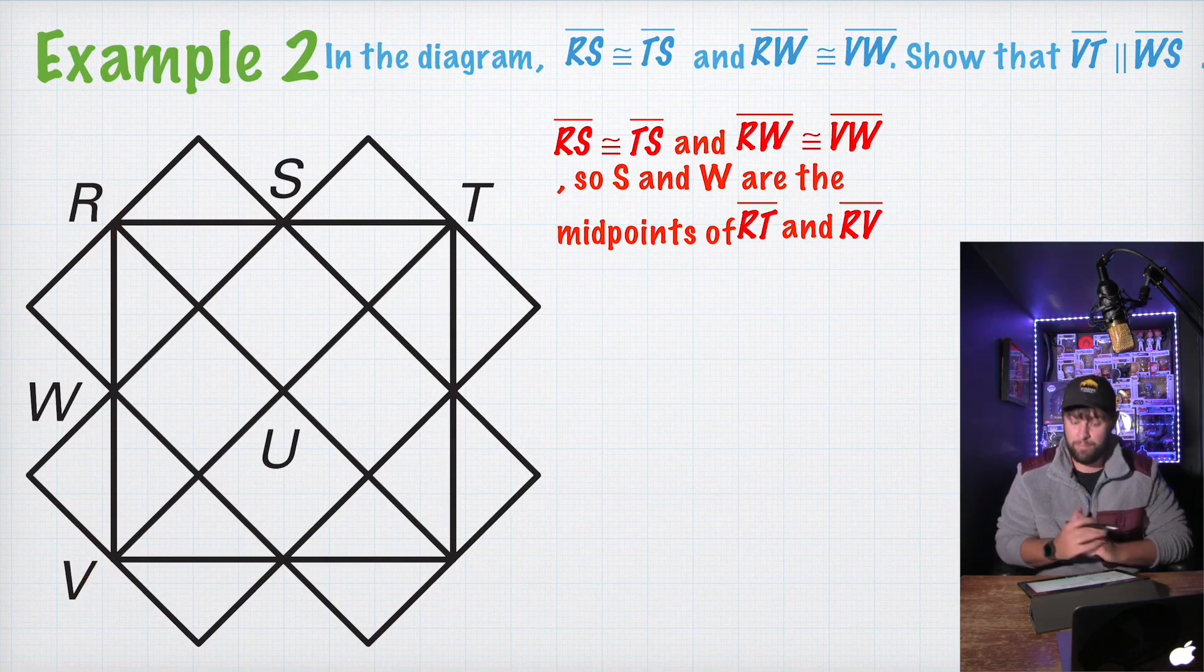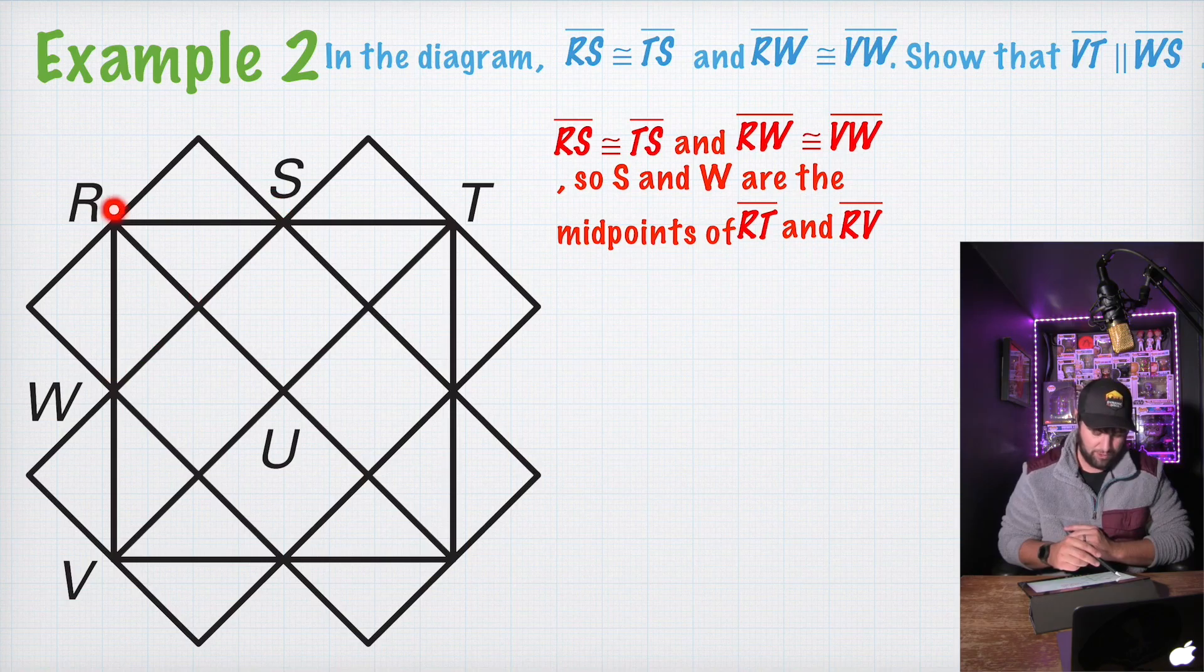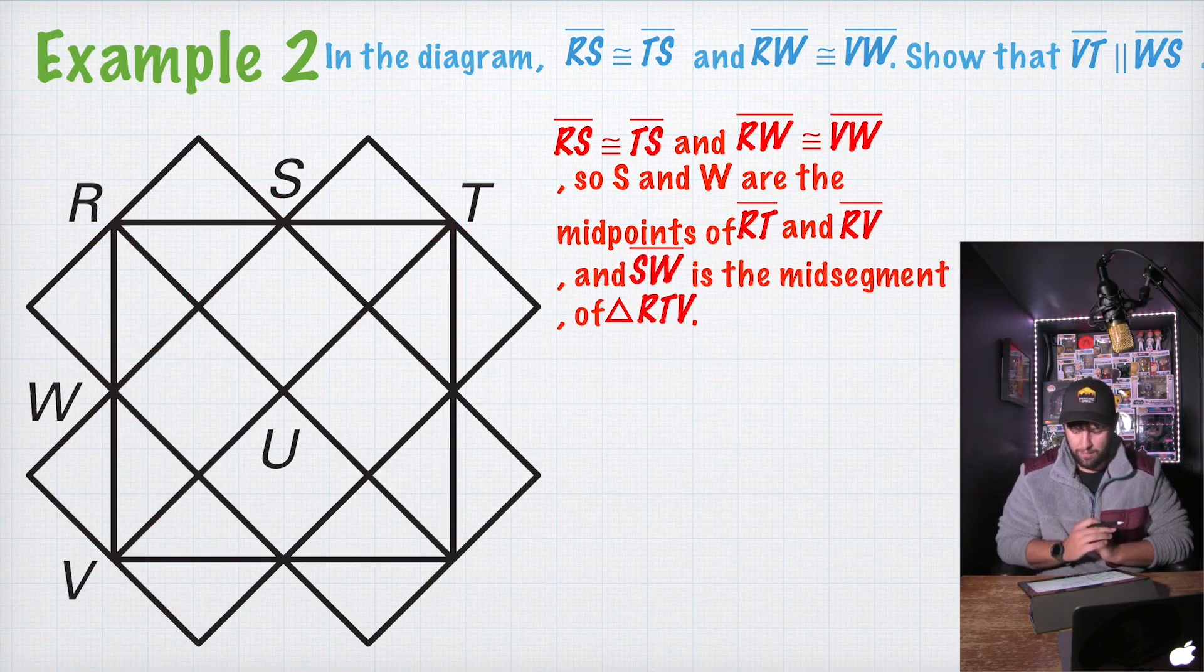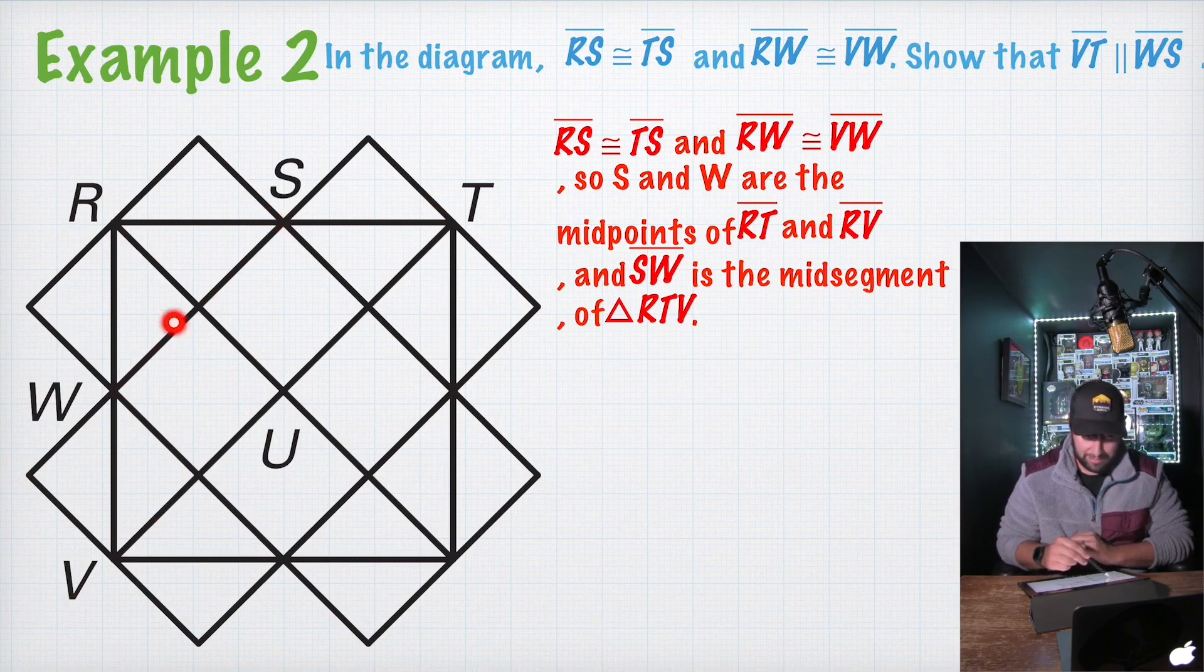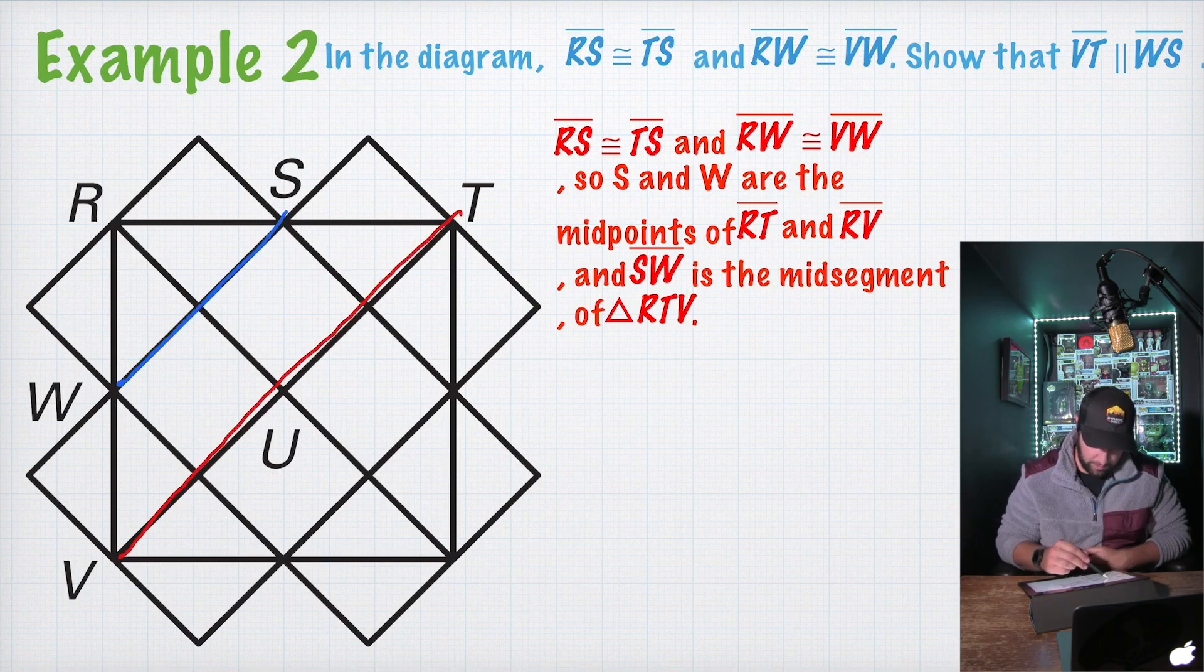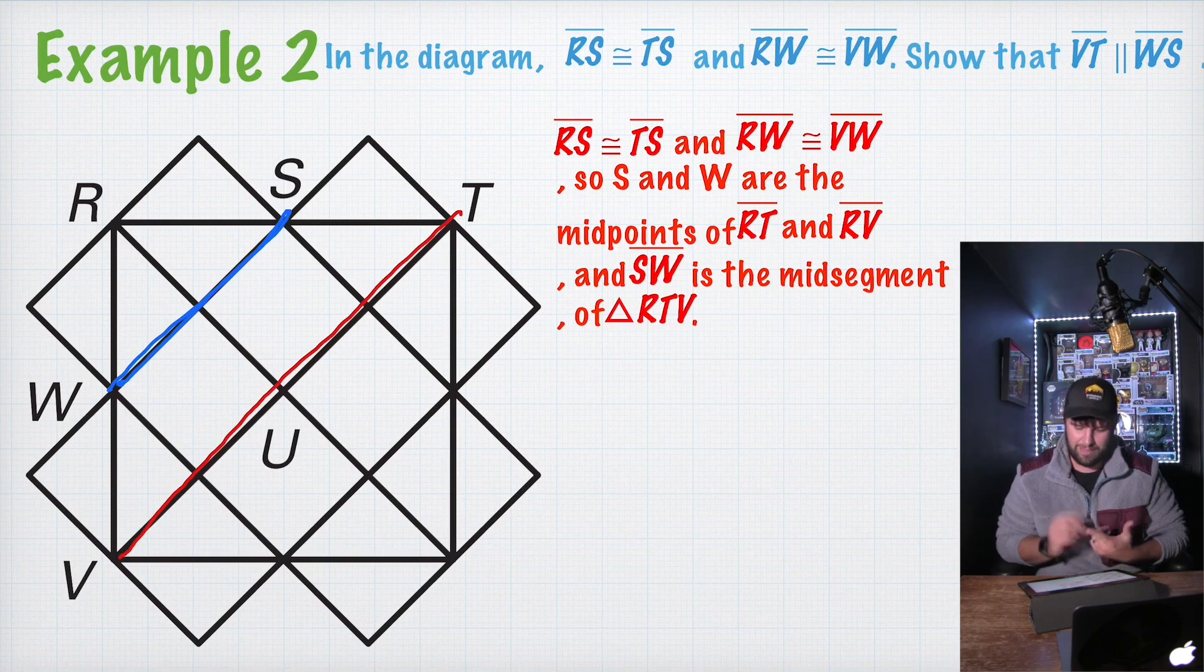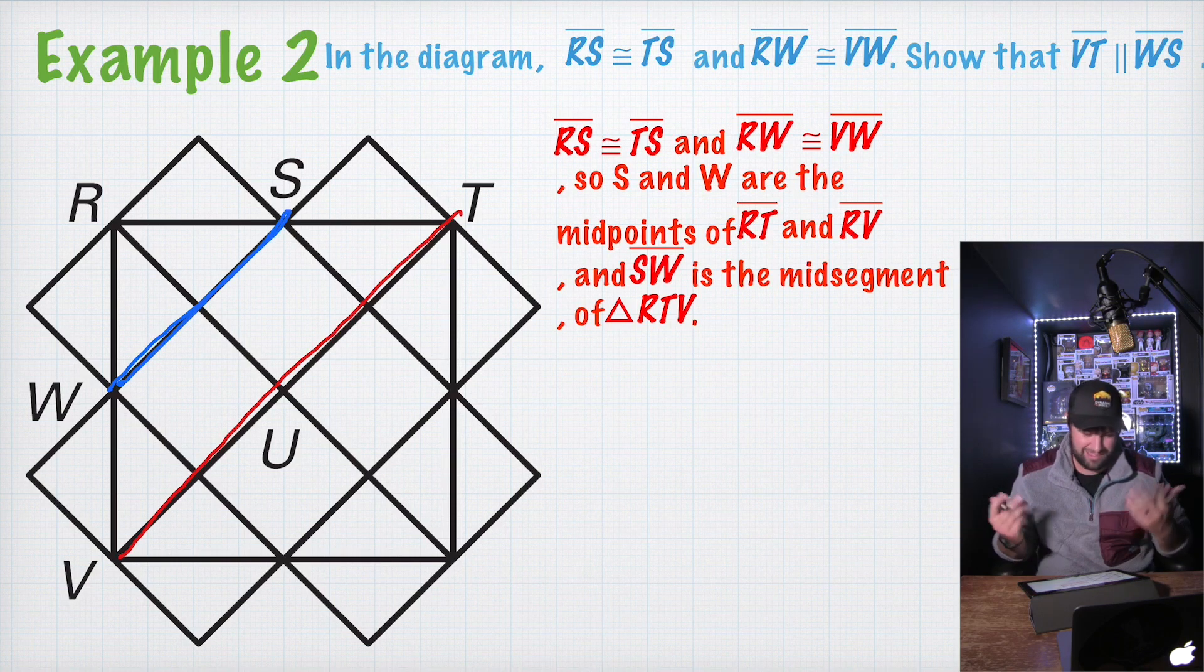If we know those are the midpoints, we know that the line connecting those two midpoints is going to be the mid-segment of triangle RVT, this outer triangle. So SW is a mid-segment of triangle RTV. So SW is a mid-segment. And ultimately we're trying to prove that VT, this line here, I'll draw it in red. This line is parallel to WS, the blue line.